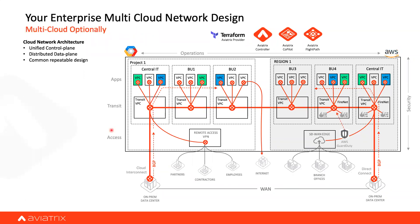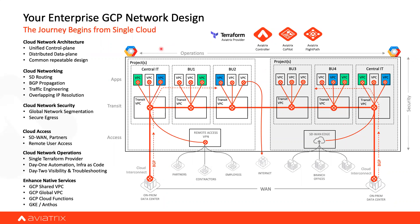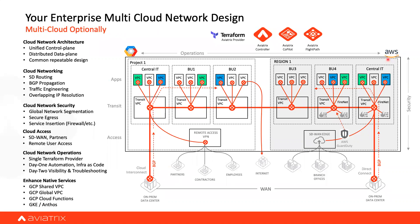This is the power of the architecture: take the GCP slide and swap the logo for AWS or Azure, and everything remains the same. In a multi-cloud scenario extending from GCP to AWS, there's no guesswork — everything is already there. You get all the features across multiple clouds, with BGP coming in, multiple ways to reach the other side, and failover if one path goes down.